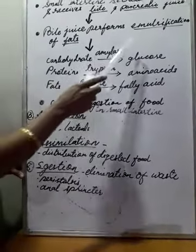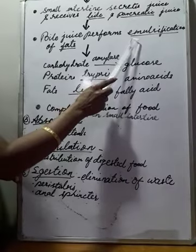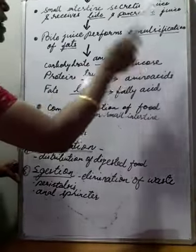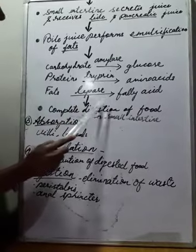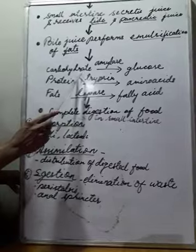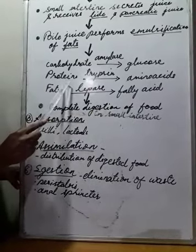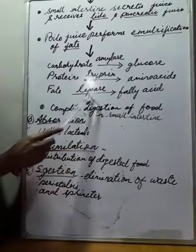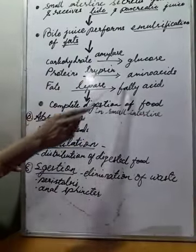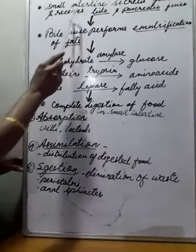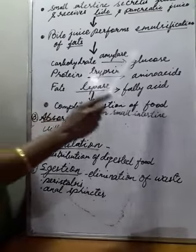The bile juice acts on fat molecules and converts them into smaller fat globules. Next, the pancreatic juice — the pancreas secretes three enzymes: pancreatic amylase, pancreatic trypsin, and pancreatic lipase. Pancreatic amylase acts on carbohydrate and converts it into glucose. Trypsin acts on protein and converts it into amino acids. Lipase acts on fats and converts them into fatty acids and glycerol. Various pancreatic enzymes and the intestinal juice convert the complex semi-digested food from the stomach into simpler forms.